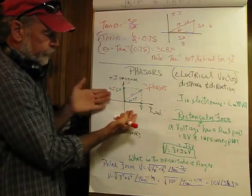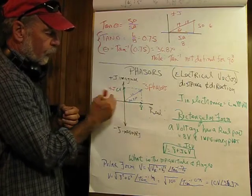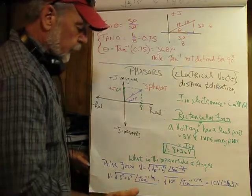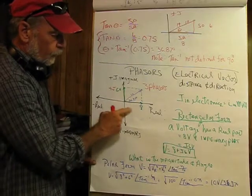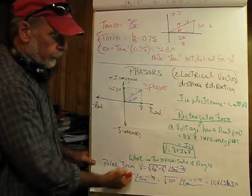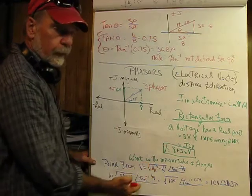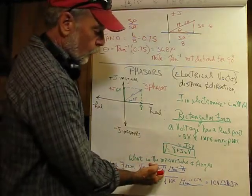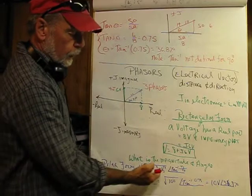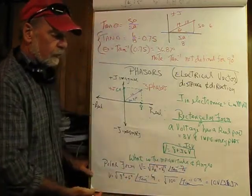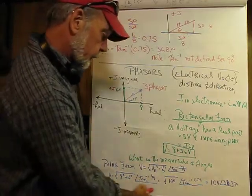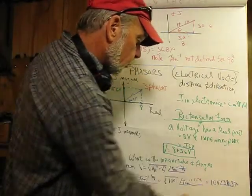If we added two sine waves — 1.8 volts and 1.6 volts shifted by plus 90 degrees — what would we end up with? To find out, we have to convert rectangular form to polar form. V equals the square root of the real squared plus the imaginary squared, which gives us the magnitude of the hypotenuse. The angle is the inverse tangent of the imaginary voltage, 6, divided by the real voltage, 8 — giving us an angle of 36.87 degrees.